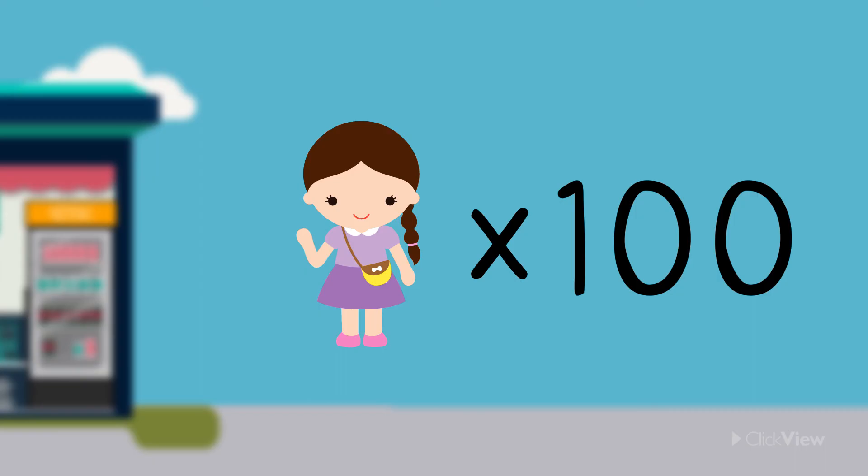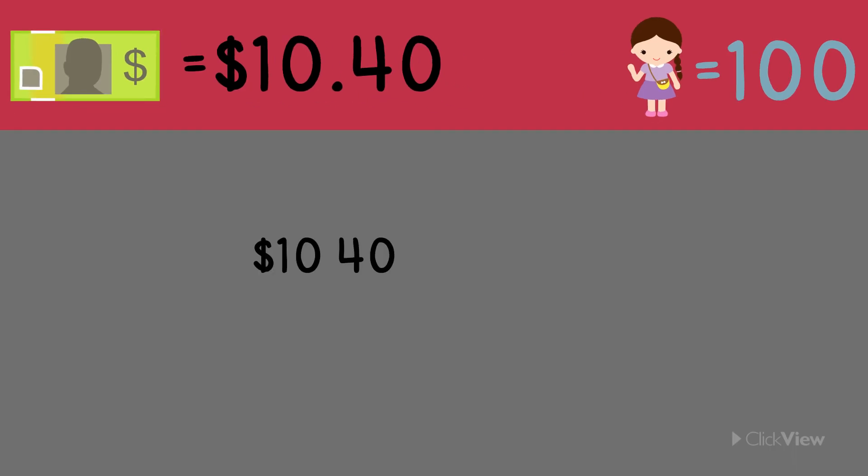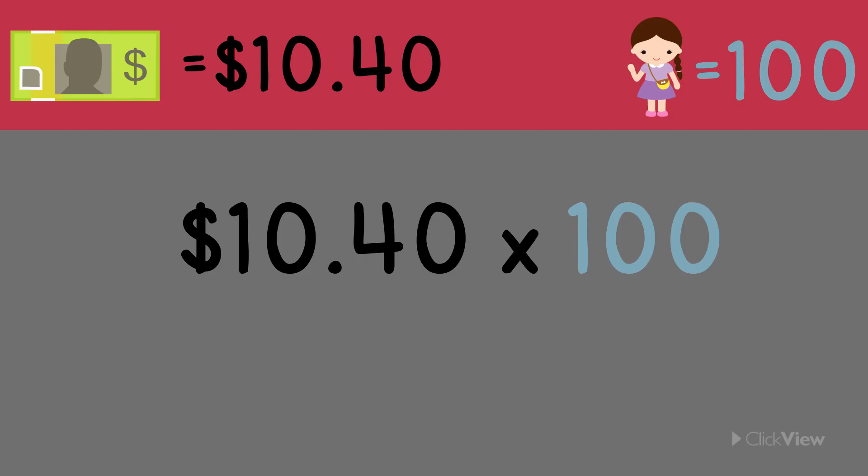Let's break this question down. We know that every person who is delivering papers gets paid $10.40. Albert needs to pay 100 people this amount, which means we need to multiply $10.40 by 100. We know that we have to move the decimal point one place for each zero in the number we are multiplying by. Because we are multiplying by 100, we need to move the decimal point two places to the right. Albert will need to have $1040 to pay everyone for one hour's work.